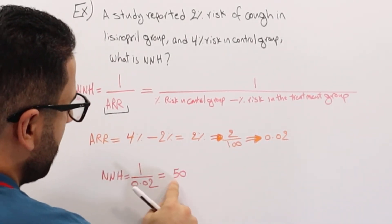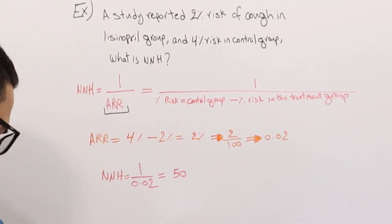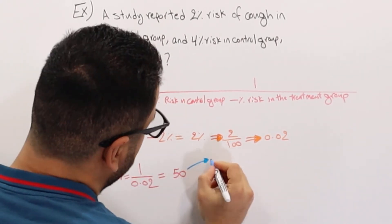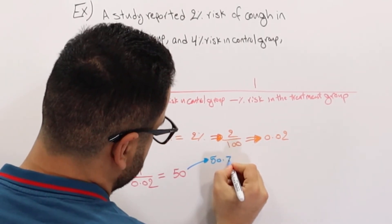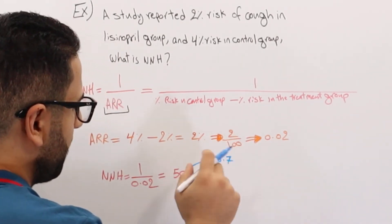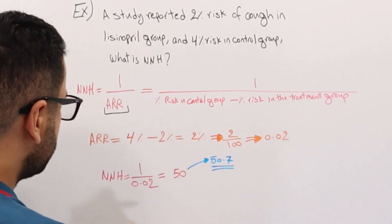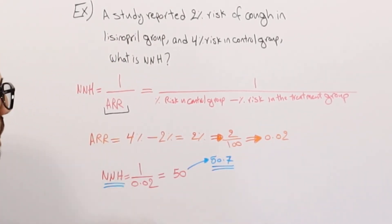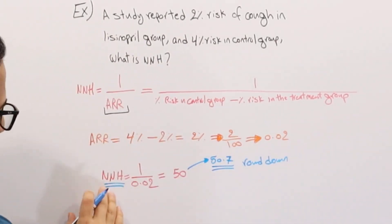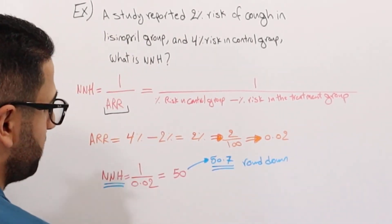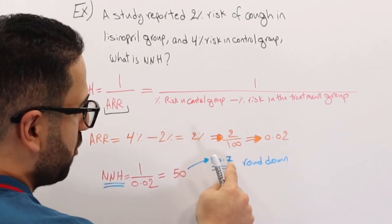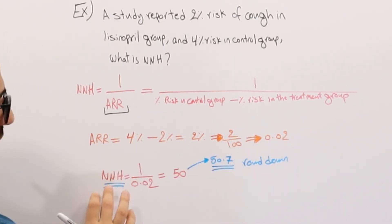One thing to keep in mind, now I have a whole number over here. What if instead of 50 I had, let's say 50.7? What are you going to do? Are you going to round up or round down? Keep this in mind: whenever we're doing number needed to harm, we always round down. This is the opposite of number needed to treat. With number needed to treat, we always round up. So if I had a number needed to treat 50.1, it's going to be 51, even though it's not 0.5. The rule of 0.5 doesn't apply with number needed to treat or number needed to harm.